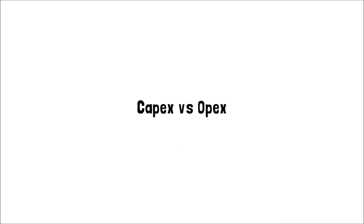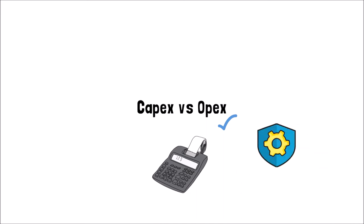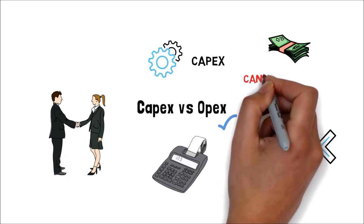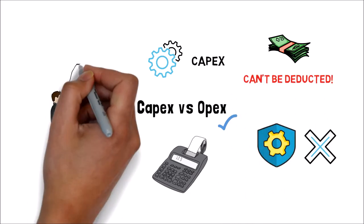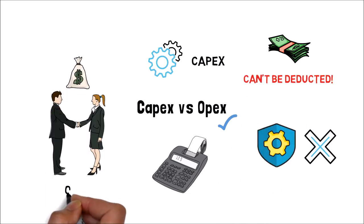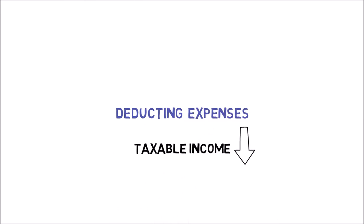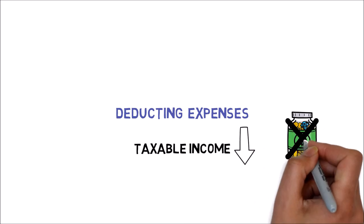In terms of income tax, OPEX is generally preferred to CAPEX. As a result, rather than purchasing equipment outright, businesses will often lease it from a vendor. Because buying hardware is considered CAPEX, all money paid upfront can't be deducted. The cost paid to a vendor for leasing equipment is classed as OPEX since it is an operational cost, allowing for a full deduction. Deducting expenses lowers taxable income, which is calculated after net earnings are removed.